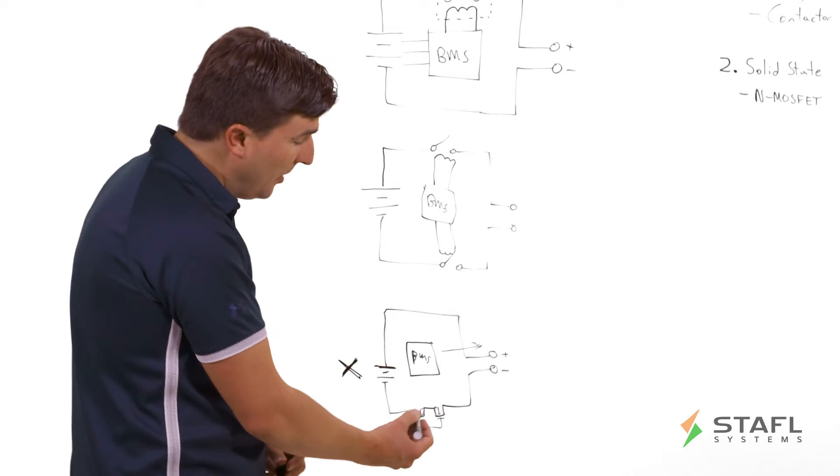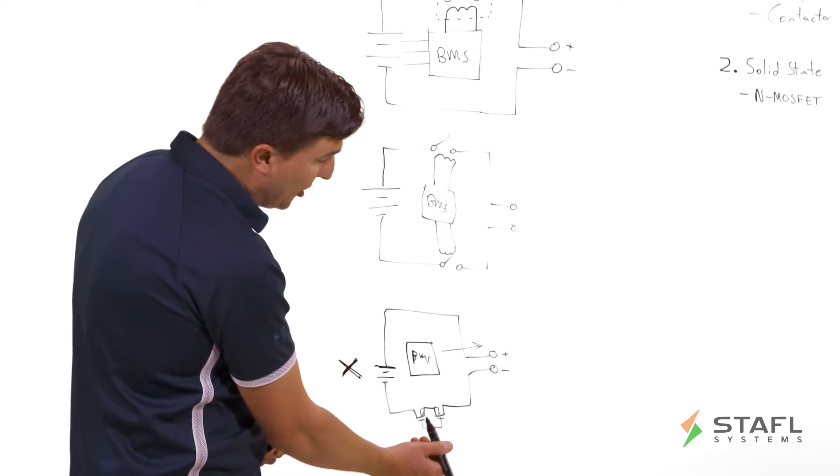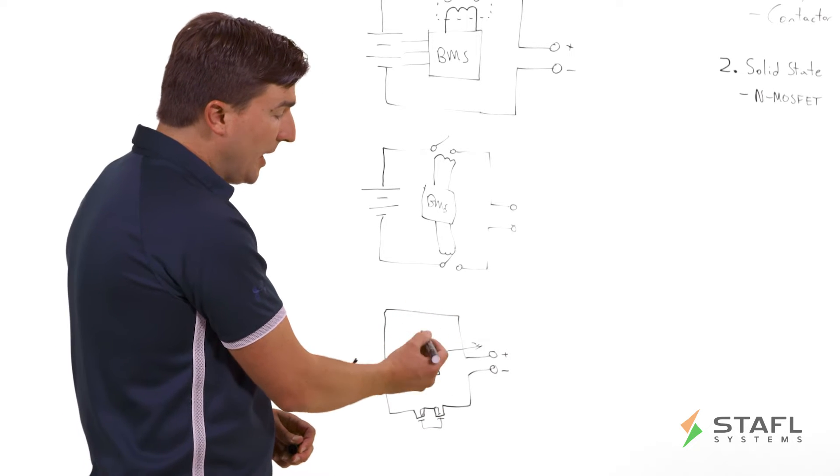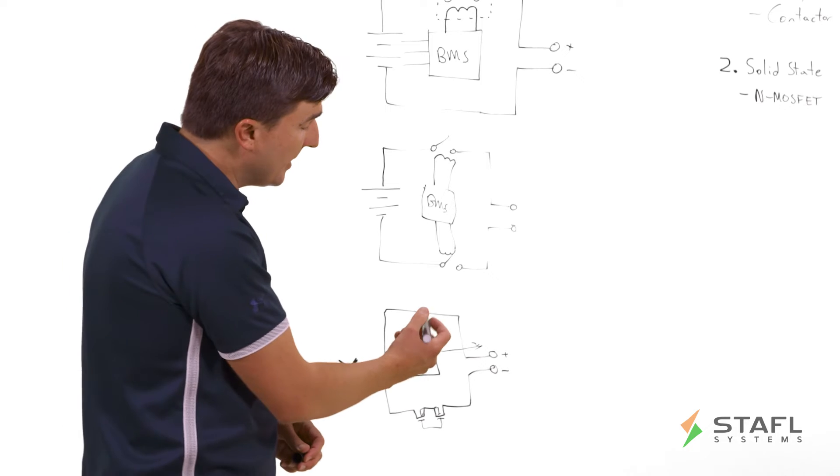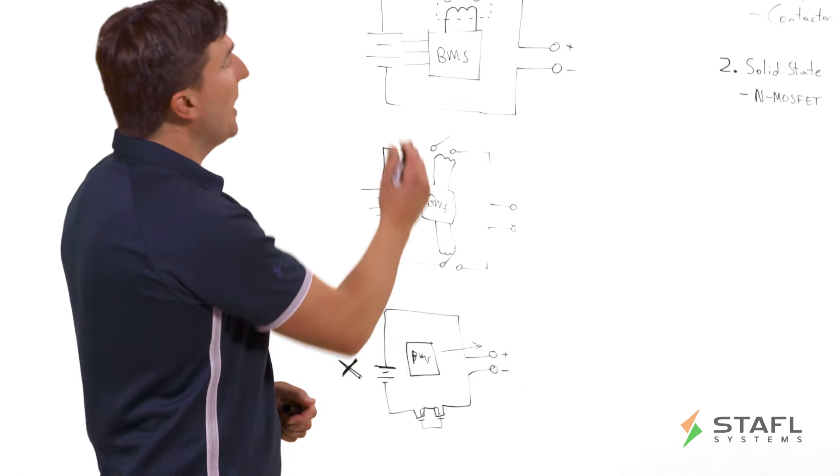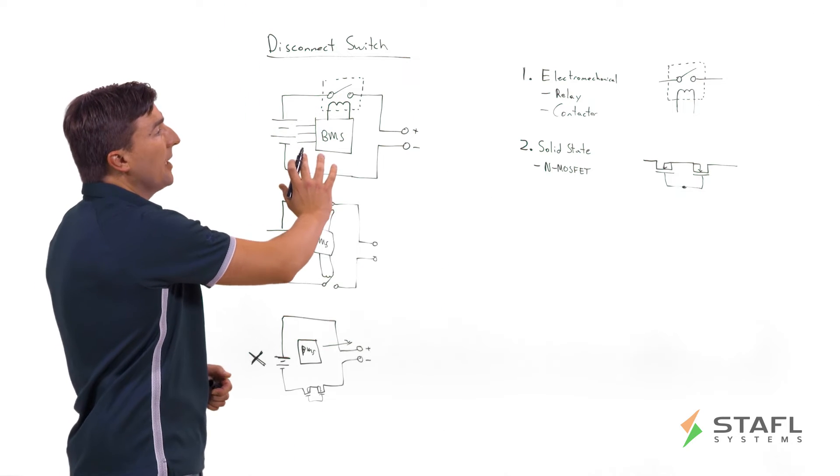Instead, what you can do is take a solid state switch, put it on the positive side of the battery, and then just have a gate driver that's either isolated or has the capability to do a high common mode voltage so you can drive it on the positive side just like as shown in this diagram.